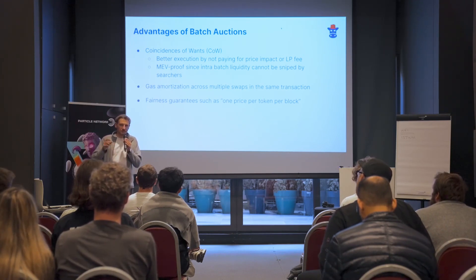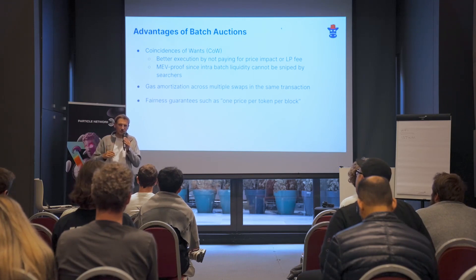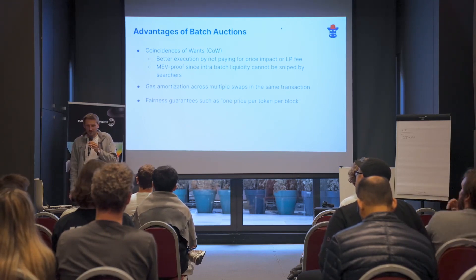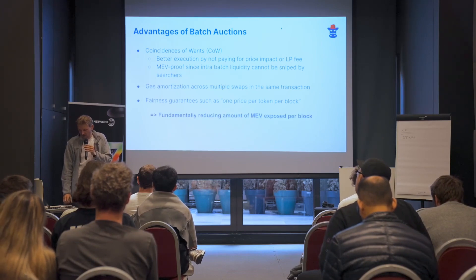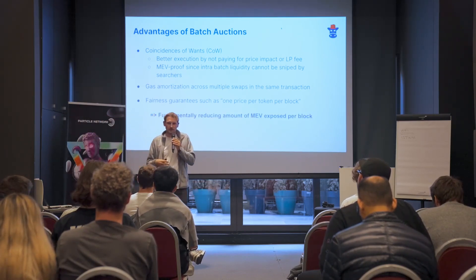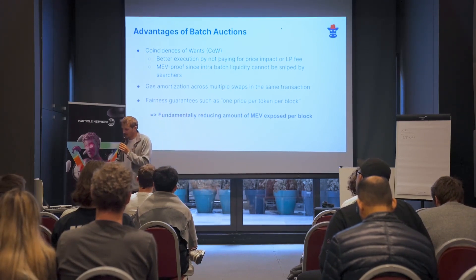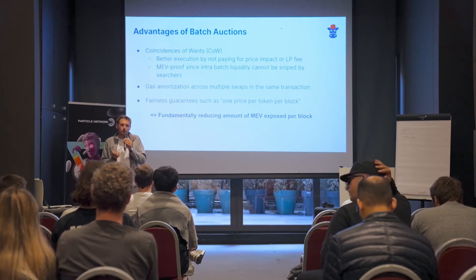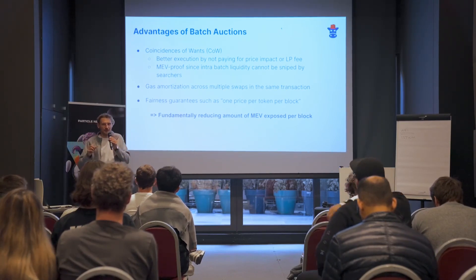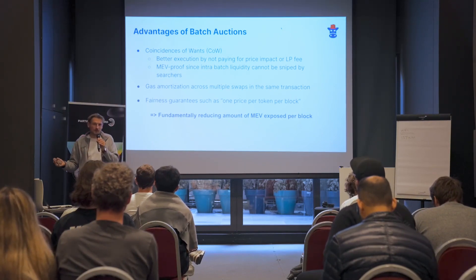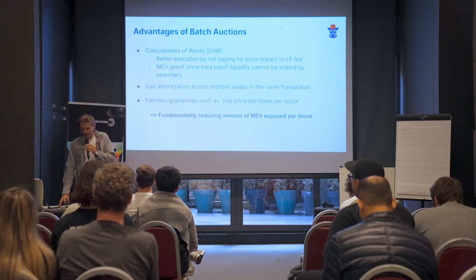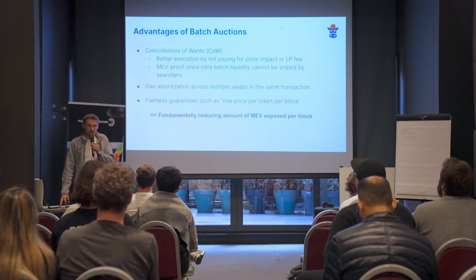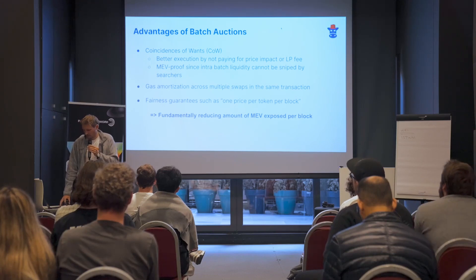This uniform clearing price is not possible in the traditional model because every Ethereum transaction is executed sequentially. But in a batch, you can say that intents on the same token pair must be executed at the same price. This fundamentally reduces MEV — not just helping you make fewer mistakes, but if there's just a single price per token per block, there's no way a builder could rearrange or take advantage of buying an asset low and reselling it higher within the block. We think this is one of the strongest ways to fundamentally reduce MEV on-chain.